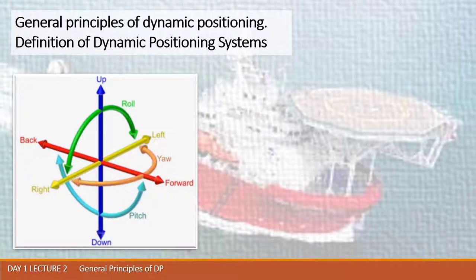Any physical body when placed in an unstable water environment may be moved on six degrees of freedom: forward and back, up and down, from right to left, and may also roll from side to side, and may be rotated about a vertical axis in any direction. Concerning DP theory, we have our vessel in a water environment which may be moved on the next six degrees of freedom.